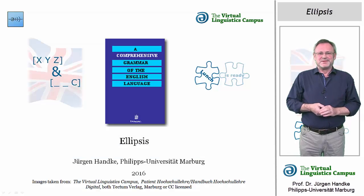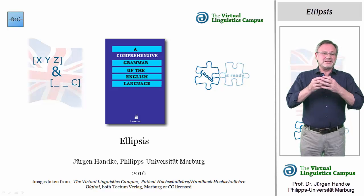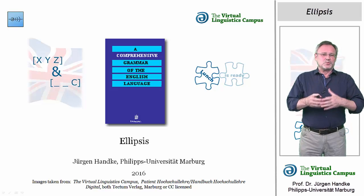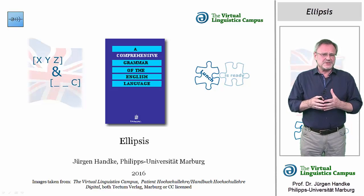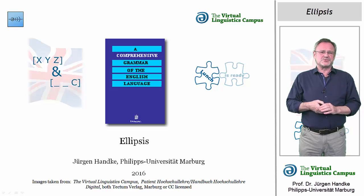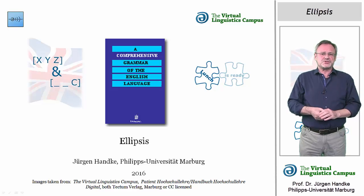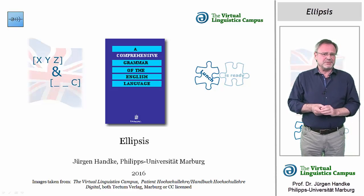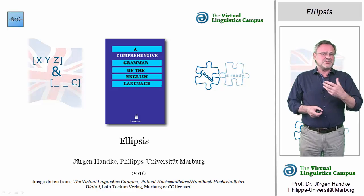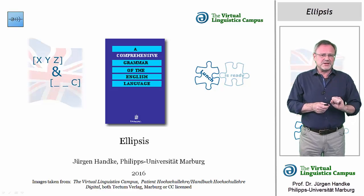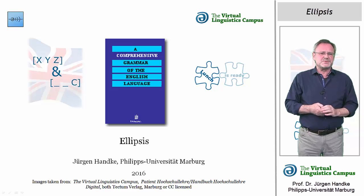Hello. In the following I will talk about ellipsis, which means grammatical omission in contrast to other kinds of omission, such as phonological loss or clipping. In general, ellipsis explains why some normally obligatory element of a grammatical sentence is missing.